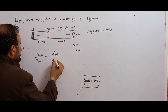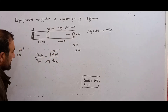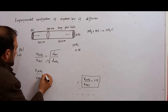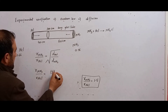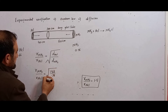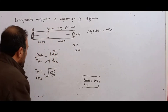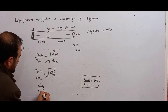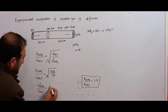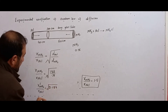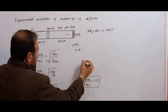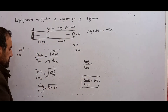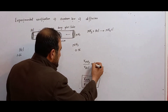According to Graham's Law, the rate of diffusion is inversely proportional to the square root of density. So R(NH3) / R(HCl) = sqrt(density of HCl / density of NH3) = sqrt(1.66 / 0.76) = sqrt(2.184) = 1.477.